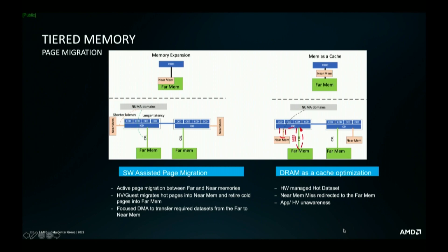When it comes to tiered memory, we talk about page migration. One way is to give control to the software, or you do it in hardware — there are pros and cons to both. If you do it in software, typically your hypervisor or application has a far better understanding of when it is seeing a slowdown in runtime performance. On the other hand, if you do it in hardware, performance is better, but it may lead to unexpected behavior at times. Both approaches have been explored in the ecosystem.